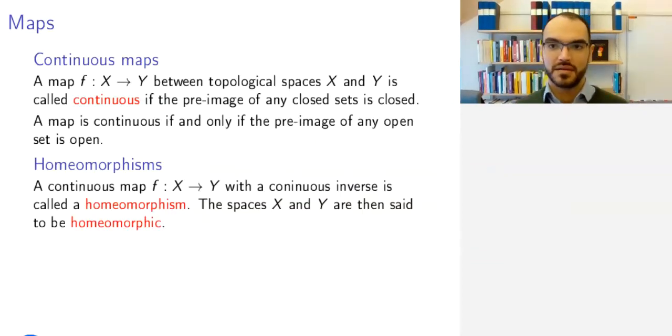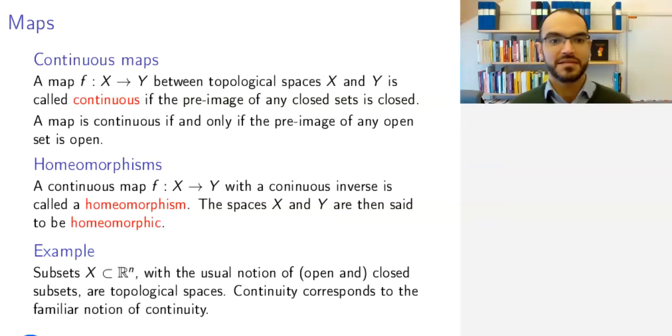The bijections that you want to consider, if you want to say that two topological spaces are roughly the same, then the notion is homeomorphism. A homeomorphism is a continuous map with a continuous inverse. Then you say that the topological spaces in question are homeomorphic. Notice this presence of the letter E, not to confuse this with homomorphism. The subsets of Rⁿ with the usual notions of open and closed subsets are topological spaces. In that case, you can prove that continuity corresponds to the usual notion of continuity of maps.